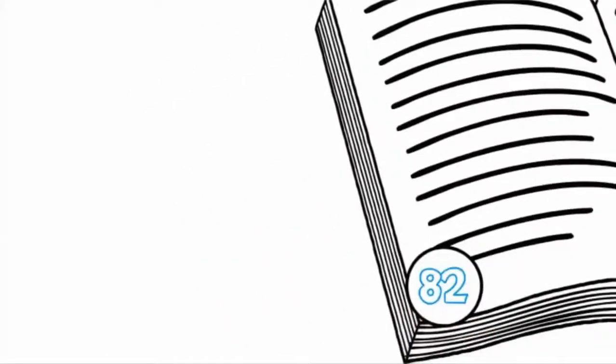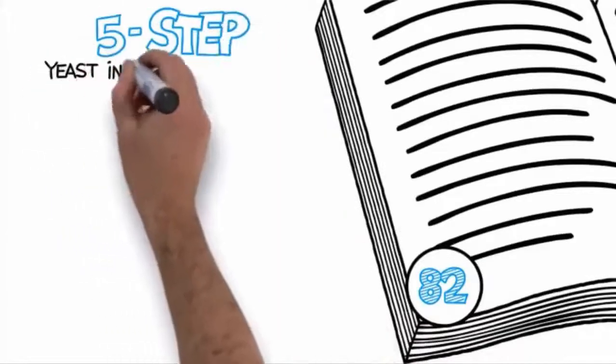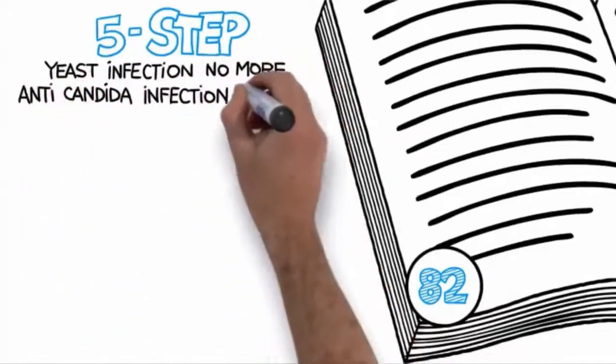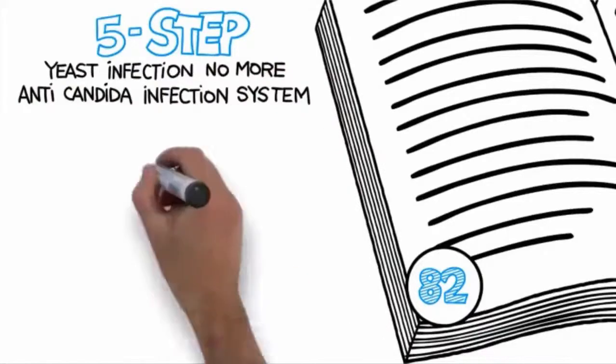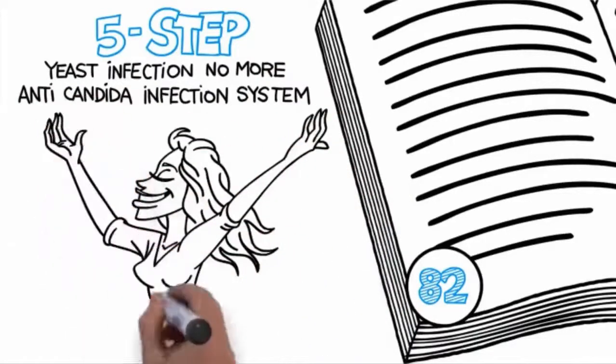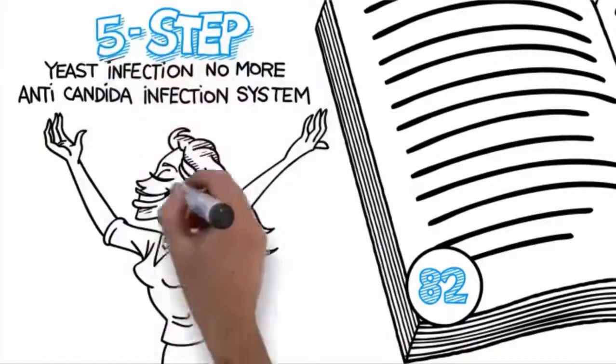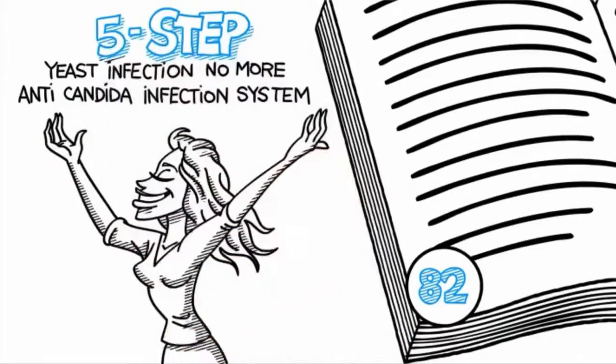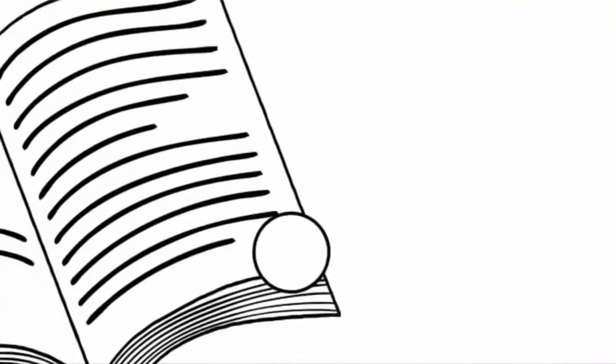Here are just a few of the unique things you will find inside the Yeast Infection No More program. On page 82, you'll find the heart of the clinically proven five-step yeast infection no more anti-candida infection system. Simply follow the steps in the order they appear, and you are guaranteed to eliminate your yeast overgrowth from the inside out, get rid of all yeast infection symptoms, and dramatically improve your quality of life.